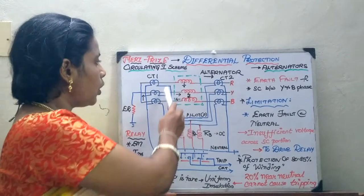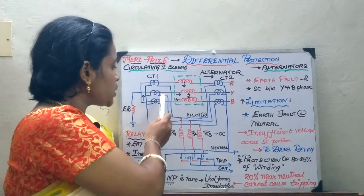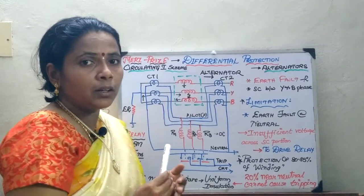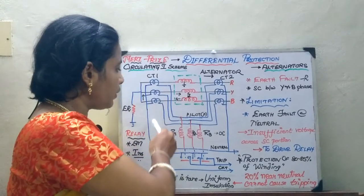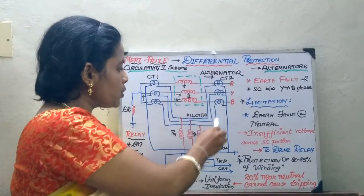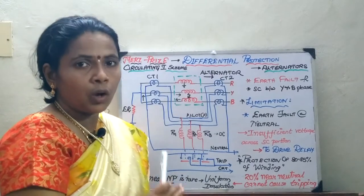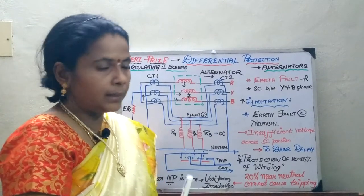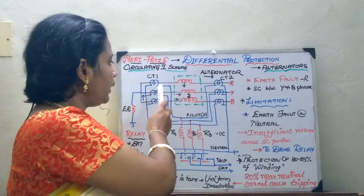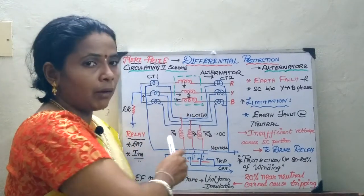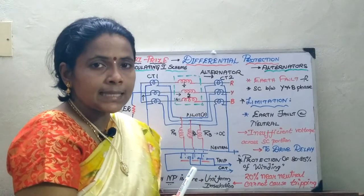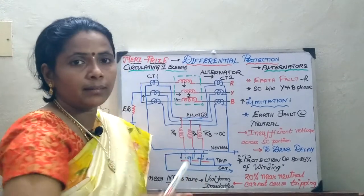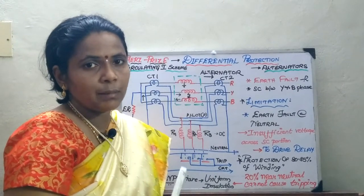This is the alternator winding to be protected, and CTs are connected on either side. Under normal condition, when there is no fault, the current entering the relay coil will be balanced and the relay will not operate. Once a fault occurs at any point, the current through the relay will be unbalanced, and this differential current is going to operate the relay. This is the base concept.